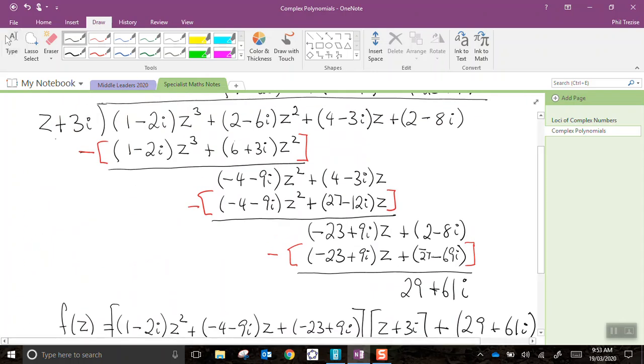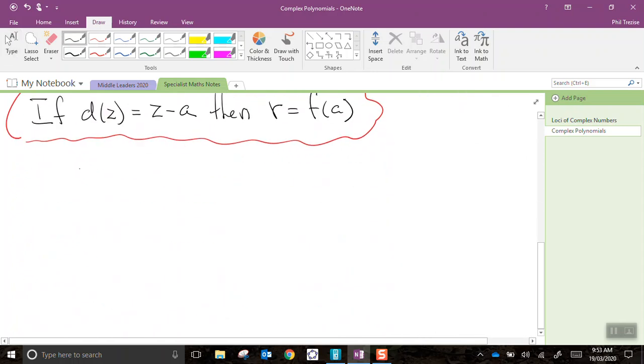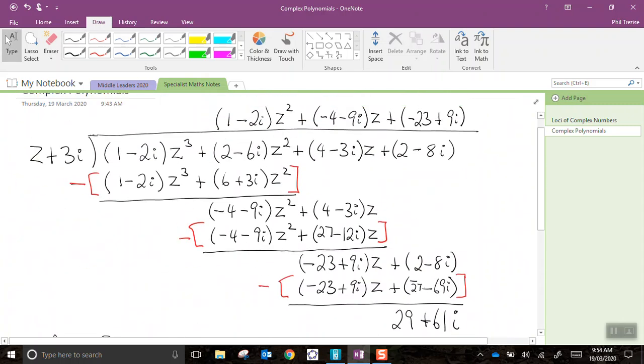Our divisor was z plus 3i. So, we're thinking z minus a. In our case, is z plus 3i. That's the same as z minus negative 3i. So, a is negative 3i in this case. We want to evaluate f of negative 3i. Now, we would do that, of course, by substituting negative 3i into this original polynomial. Let me highlight the polynomial here.